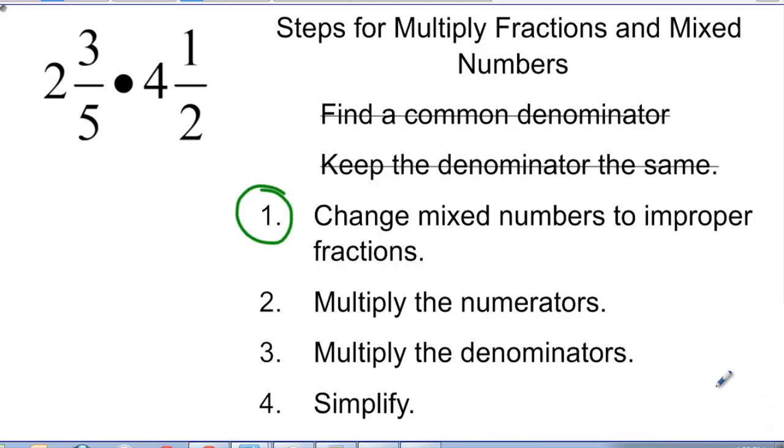Okay, so I'm going to change my mixed numbers to improper fractions, and hopefully everybody knows how to do that by now. Remember, just follow your circle around. So I would get 13 fifths. So again. And I get 9 halves. And I am multiplying these together.